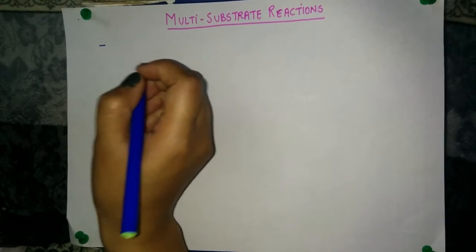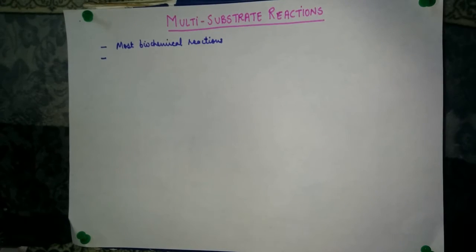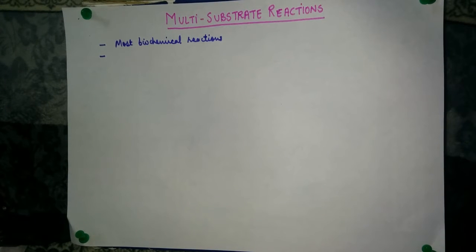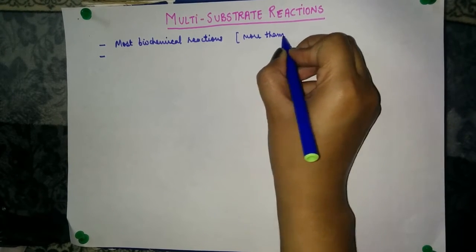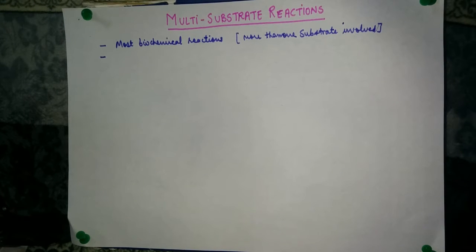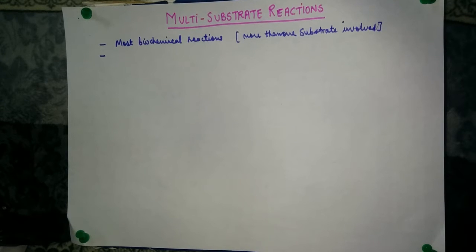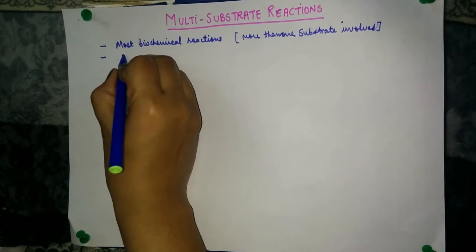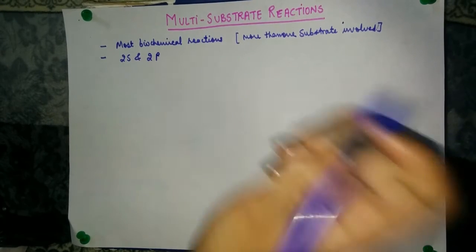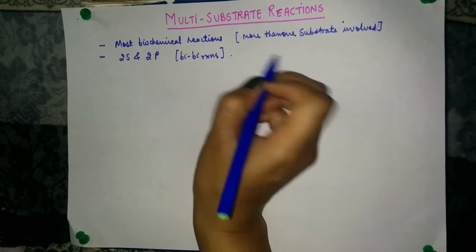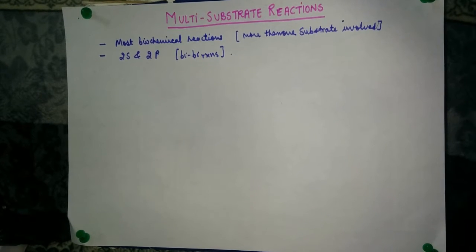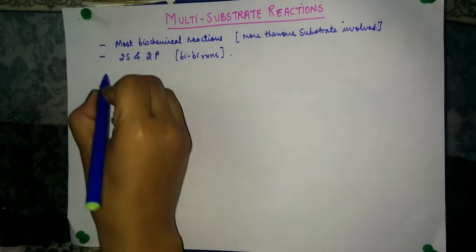In this video we are going to discuss multisubstrate reactions. Most biochemical reactions occurring in living bodies are multisubstrate reactions, meaning more than one substrate is involved. We shall discuss reactions involving two substrates yielding two products. These are called bi-bi reactions, and they often involve the transfer of certain groups.